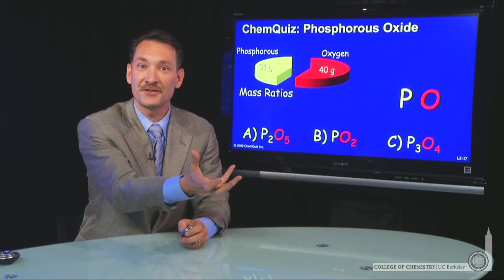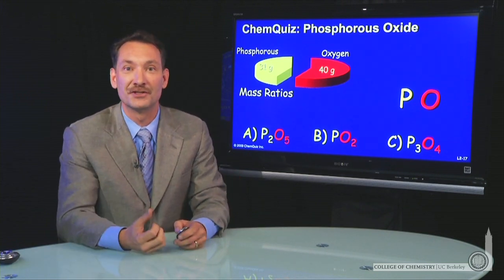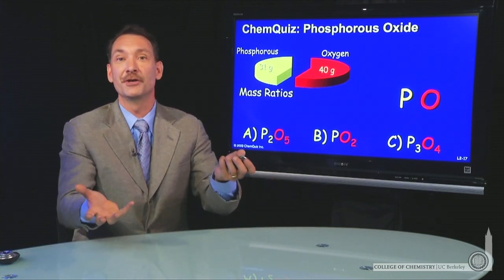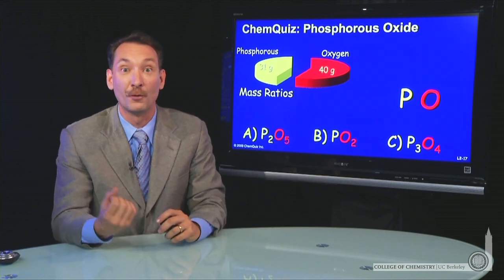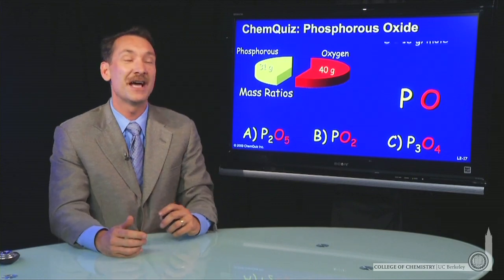So it's 31 grams of phosphorus react with 40 grams of oxygen, for a mass ratio of 3 to 4. But when we write chemical formulas, we do not use mass ratios. We use mole ratios. So let's convert those masses to moles.